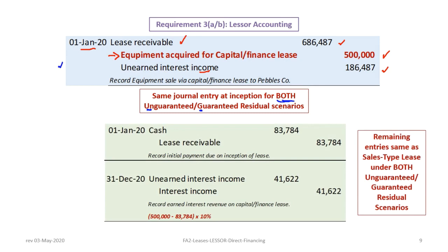After inception, the journal entries are the same as for a sales type lease. The next entry, also on January 1, 2020, records the initial payment from Pebbles: debit cash $83,784, credit lease receivable $83,784. At the end of the year, we record an interest accrual: debit unearned interest revenue and credit interest income. The $500,000 initial PV minus the first payment, which is attributed 100% to principal, times 10% gives $41,622.